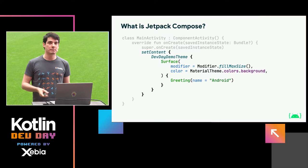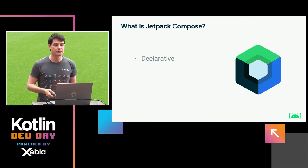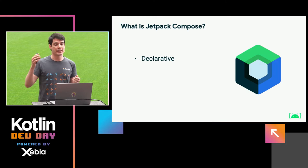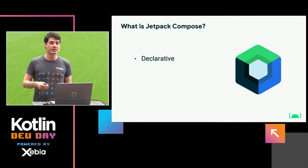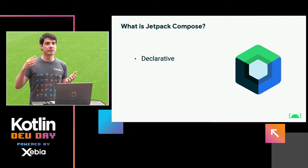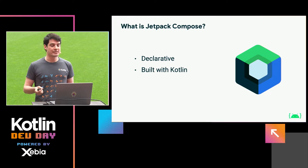Some things I want to highlight about Compose: first of all, it's declarative. With other frameworks like the view system on Android, you would create view instances and then call mutating methods on them and manage their state. In Compose this doesn't happen — you describe the shape of your UI declaratively and Compose will keep track of state changes and update the UI. Second, it's built with Kotlin, which is obviously really important for us today.